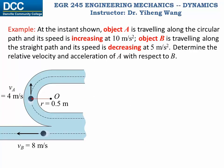Let's look at this example. The two objects A and B are moving along different paths. Their velocities at this instant are given, and also we know that the speed of A is increasing at 10 meter per second squared, and the speed of B is decreasing at 5 meter per second squared. We need to determine the relative velocity and acceleration of A with respect to B.